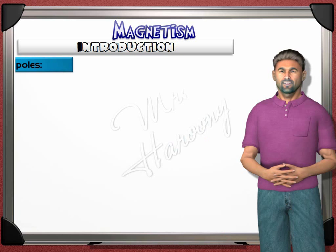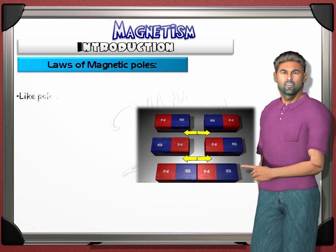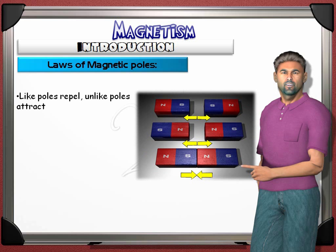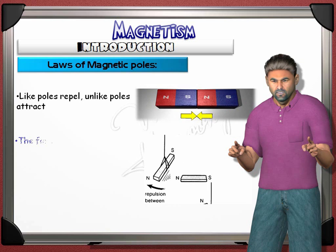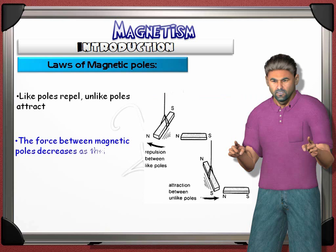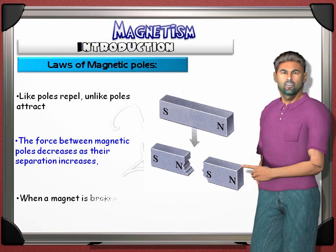Laws of the magnetic poles: like poles repel, and unlike poles attract. If two like poles — for example two north poles or two south poles — come close to each other, they will repel. But if they are of opposite type and are brought together, they will attract. The force between magnetic poles decreases as their separation increases. When a magnet is broken into pieces, each piece becomes a new magnet.